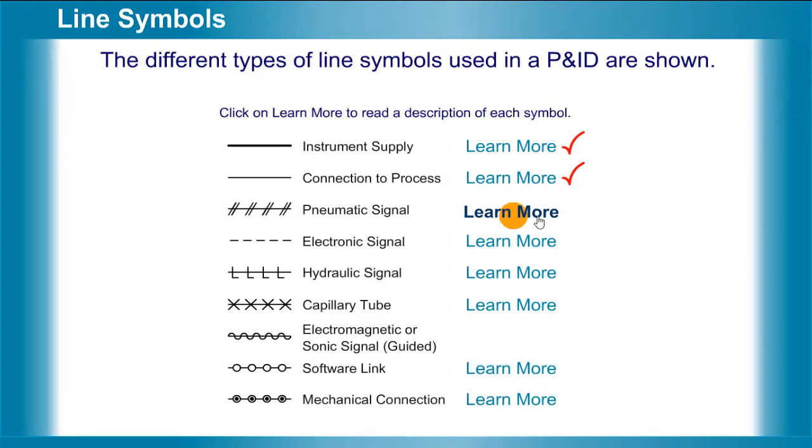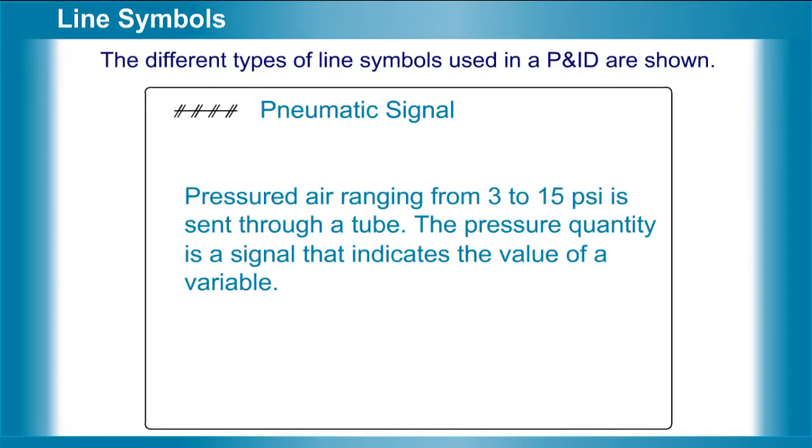Pneumatic signal. Pressured air ranging from 3 to 15 pounds per square inch is sent through a tube. The pressure quantity is a signal that indicates the value of a variable.